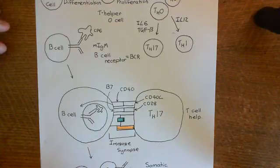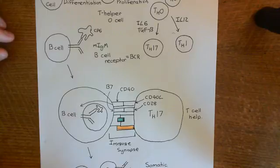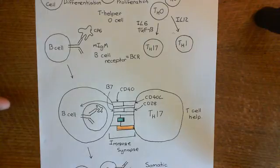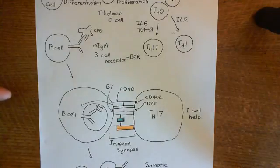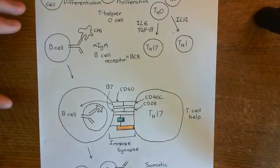Welcome to this next video in which we are discussing the drug treatment of rheumatoid arthritis. We're currently in the process of discussing the pathogenesis of rheumatoid arthritis. We've seen how we are going to initiate an adaptive immune response against the citrullinated protein autoantigens which are present within the synovium, and this is going to occur once you have had that initial synovitis.